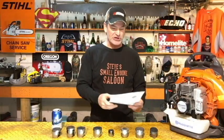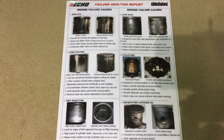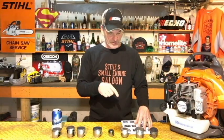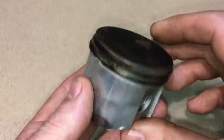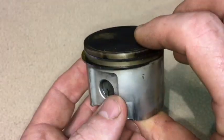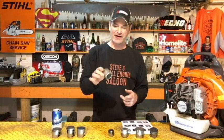Welcome back to Steve Small Engine Saloon. I've got this awesome little cheat sheet from Echo — it's a failure analysis report with good photographs on engine failure causes, explaining why your piston, cylinder, or engine might be destroyed. We're going to go through that right now. First, you need to take the cylinder off your unit so you can clearly see the piston all the way around. We're going to be talking about the intake and the exhaust side.